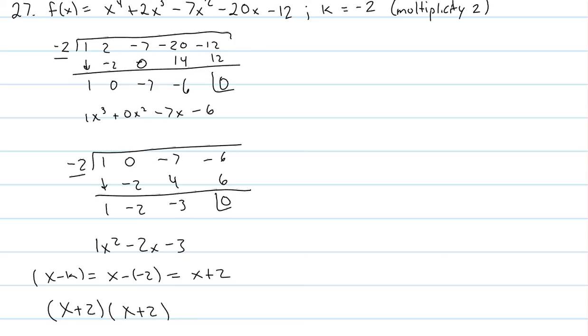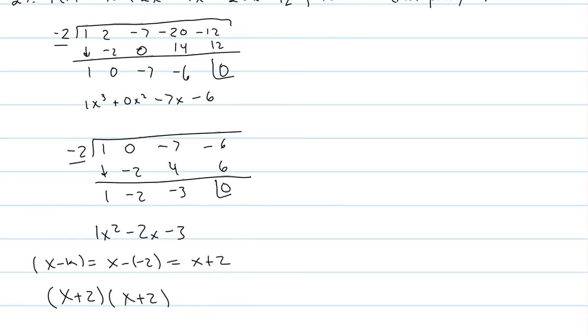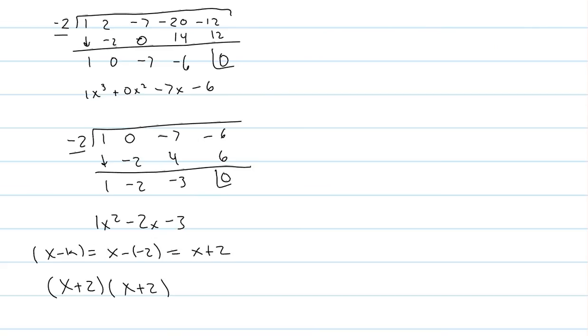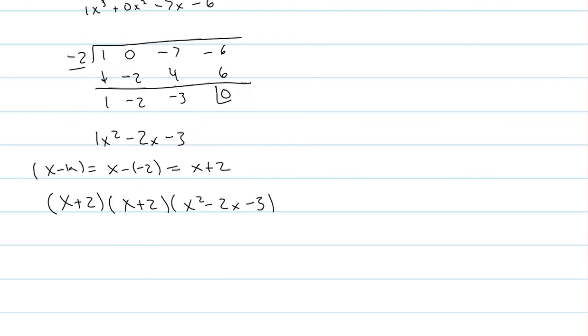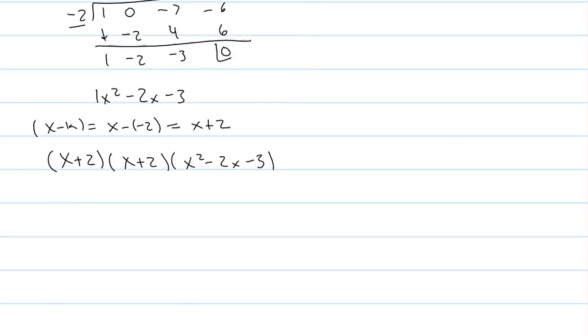And, each time we use synthetic division, we took out a negative 2. Then, our last piece of information is x² - 2x - 3. But, we have to have it in a linear equation. So, we've got to break down that x² - 2x - 3. I'm going to factor it out.